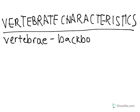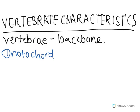Vertebrates have four main characteristics that distinguish them from any other type of animal. The first one is pretty obvious: they have a notochord, and that basically means a backbone. This is technically a flexible rod inside the body for structural support.